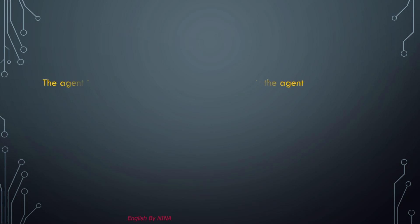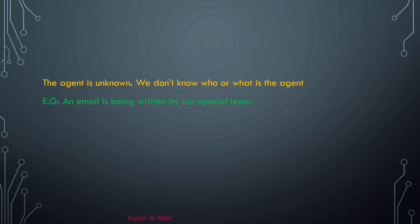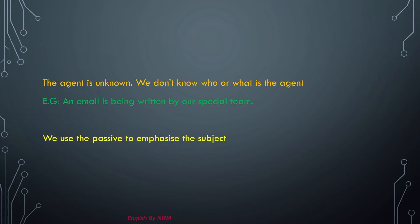Remember that the agent is often unknown in this tense — we don't know who or what is the agent. For example: 'An email is being written by our social team.' Here 'email' is our object, 'is' is our to-be verb, and 'written' is the past participle of 'write' (write–wrote–written). We use the passive to emphasize the subject.